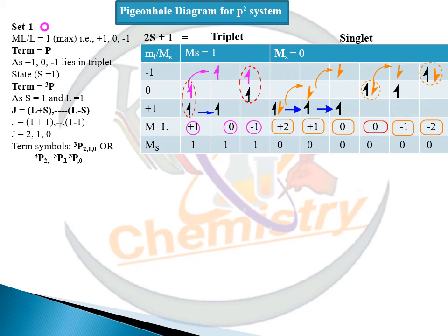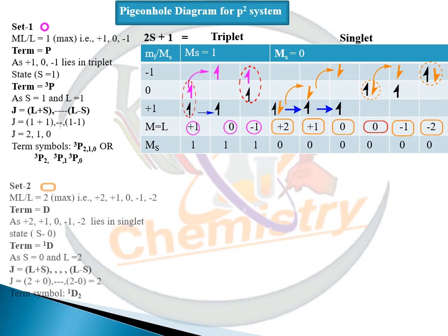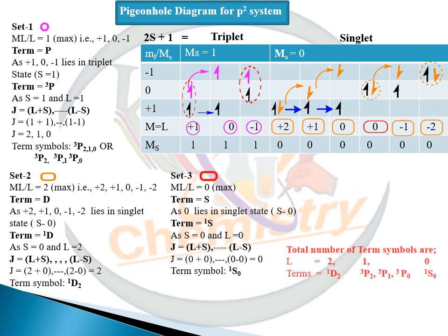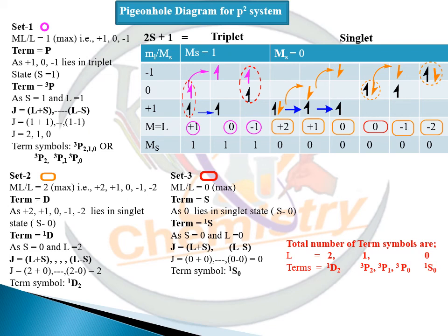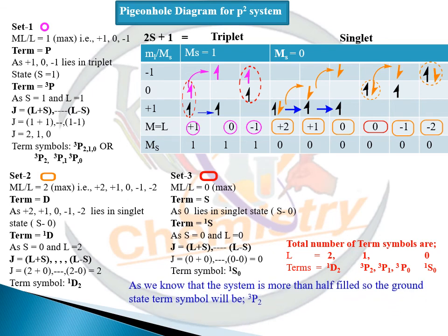But here we can also just show you how many term symbols are possible for P² system. We are just revising our previous lecture. The total term symbols are singlet D₂, triplet P₂, triplet P₁, triplet P₀, singlet S₀. Now as we have already mentioned that this system, means P⁴ system, is more than half filled, so the ground state term symbol will be triplet P₂.